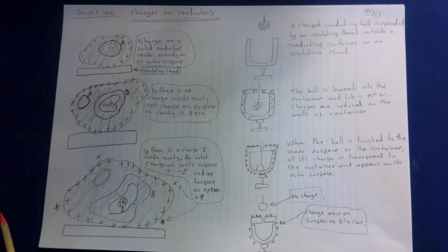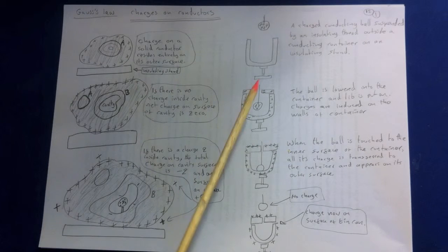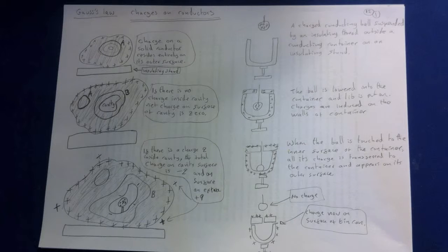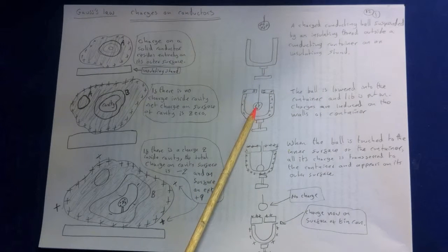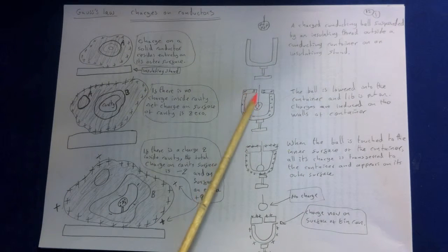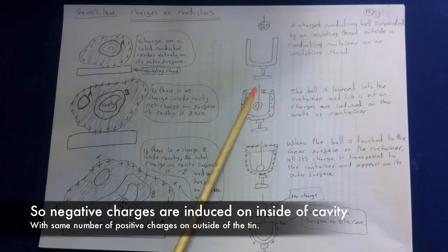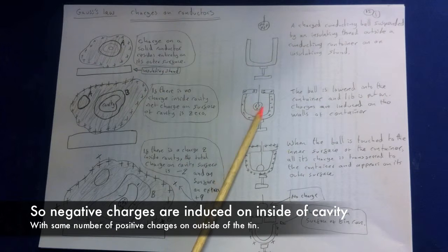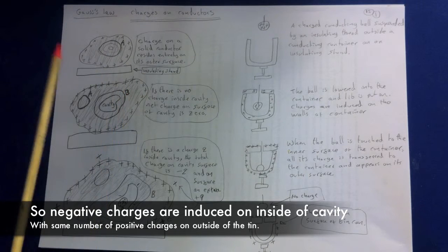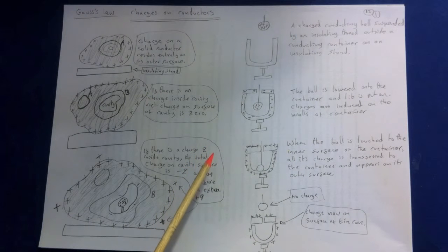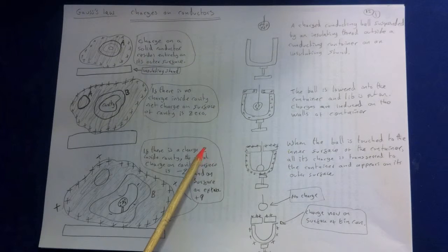Let's consider the following experiment. We place a conducting container such as a tin can on an insulating stand. The container is initially uncharged. Then we hang a charged metal ball from an insulating thread and lower it into the can. Charges are induced on walls of the container like so. There's going to be minus charges on the inside of the cavity and on the outside you're going to have plus charges. But now we let the ball touch the inner wall.